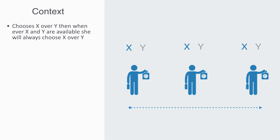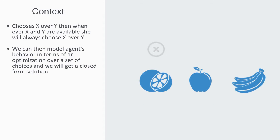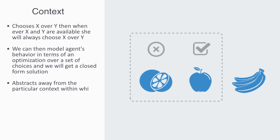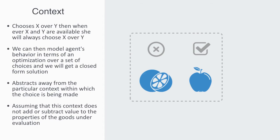Within this model, the context cannot add or subtract any value. As long as this condition of consistent choice holds, we can then model agent's behavior in terms of an optimization over a set of choices and we will get a closed form solution. Because the banana should not have affected my choices, we can abstract away from the particular context within which the choice is being made, assuming that this context does not add or subtract any value to the properties of the good under evaluation, and thus we don't need it in our model.